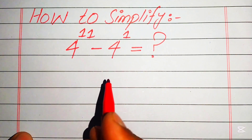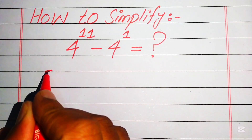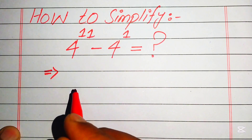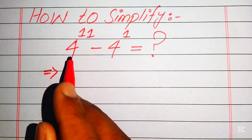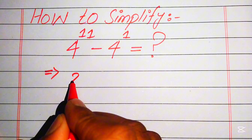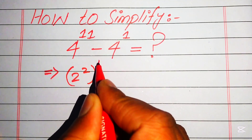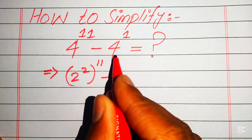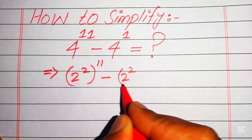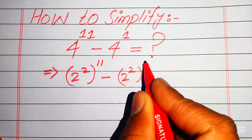The very first step we are going to do is focus on the bases of these two terms. Our base is 4, so we write this as 2 squared, whole power 11, minus 2 squared, whole power 1.